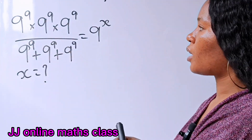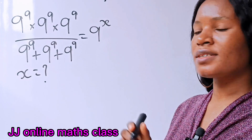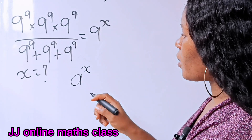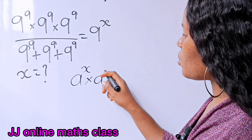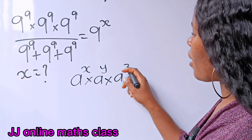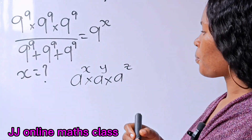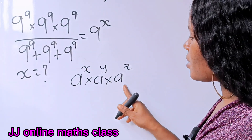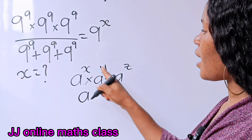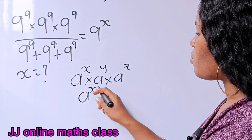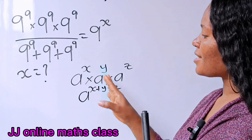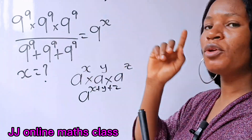The first law of indices we need to discuss: when you have a to the power of x, times a to the power of y, times a to the power of z — once they are the same base — just pick one base and then add the powers: x plus y plus z. Let's apply this law to the numerator.